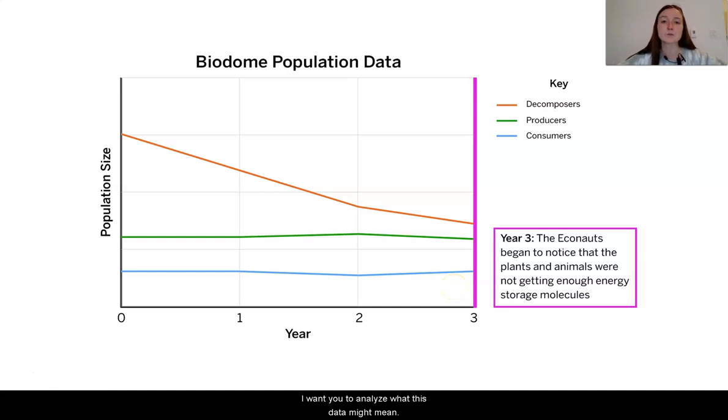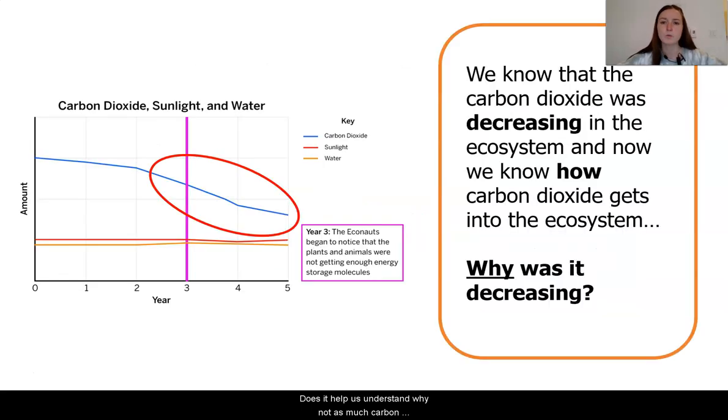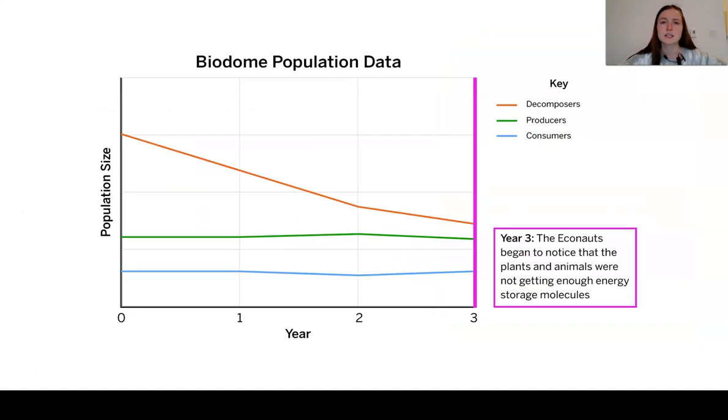I want you to analyze what this data might mean. Does it help us understand why not as much carbon dioxide was being produced? Does it help us understand what could have been going wrong in the biodome?